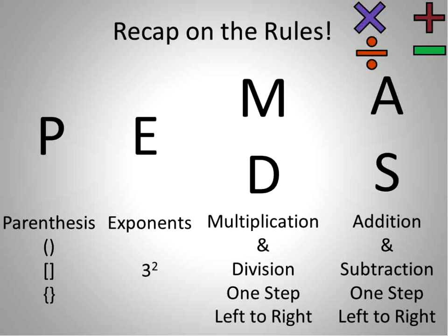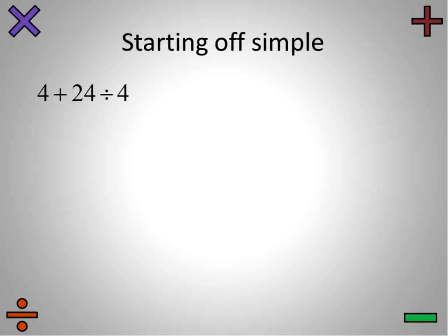Alright, that being said, let's do a quick recap on the rules. This is the way to do it right. First, we do parentheses or any kind of grouping symbols — parentheses or brackets go with that. Exponents look like this when you have something raised to a power, like 3 to the power of 2. Then multiplication and division, one step from left to right — we hit them both at the same time. Then we do all the addition and subtraction, one step left to right.